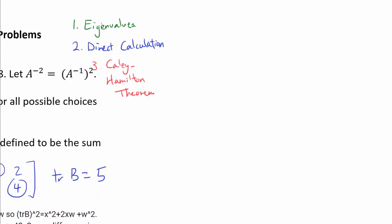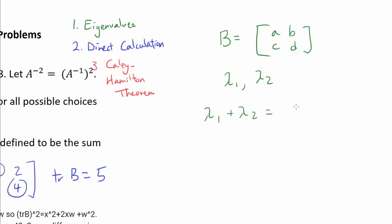Let's start with the method using eigenvalues. For a 2x2 matrix B with entries A, B, C, D, and complex eigenvalues lambda1 and lambda2, it can be shown that lambda1 plus lambda2 equals the trace of B, and lambda1 times lambda2 equals the determinant of B. Let's prove this for the 2x2 case before applying Cayley-Hamilton theorem anyway.